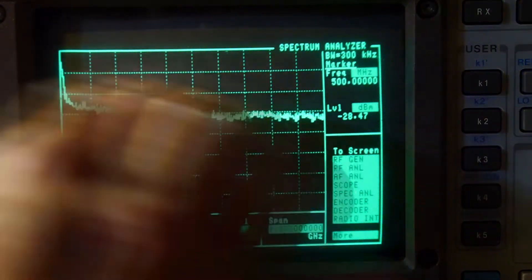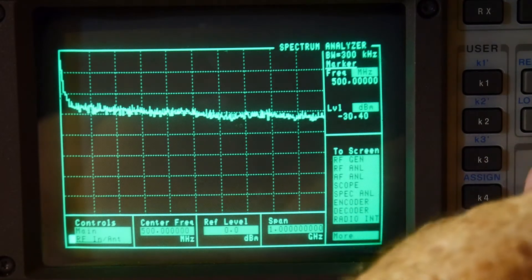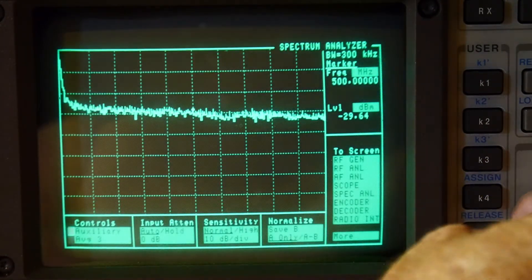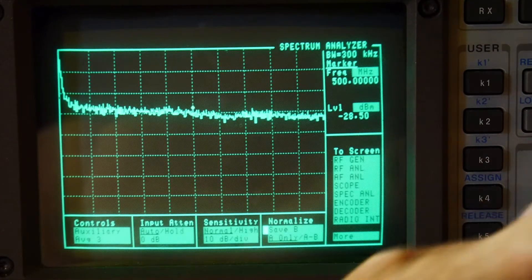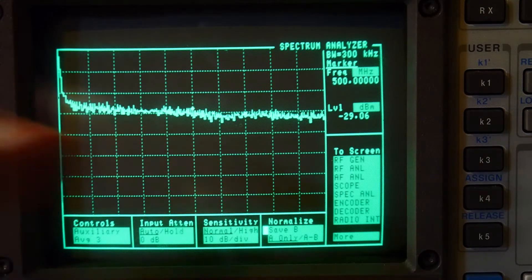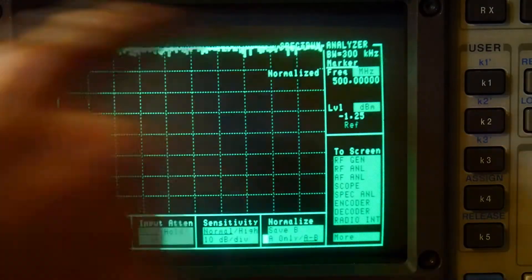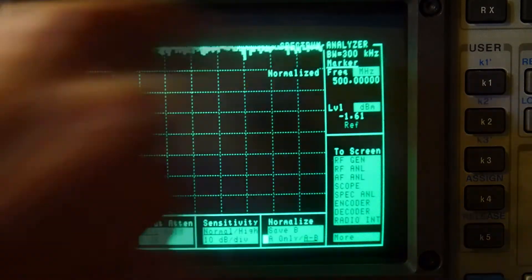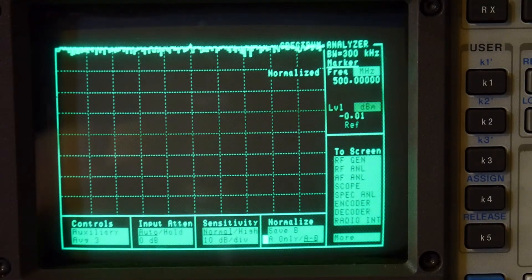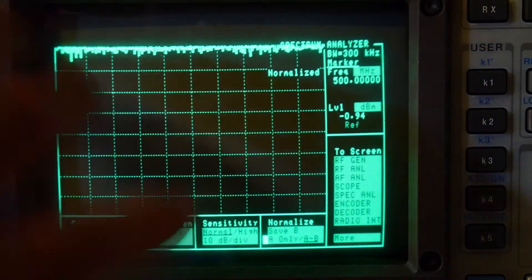But most spectrum analyzers allow you to normalize the curve, and this spectrum analyzer lets us do that. So we will go to a different part of the menu and we will save this as a normalization. And then we can subtract the two, so you can see that we're getting zero dBm and it goes straight across, okay? So anything else that we put in the circuit will deviate from that straight line.